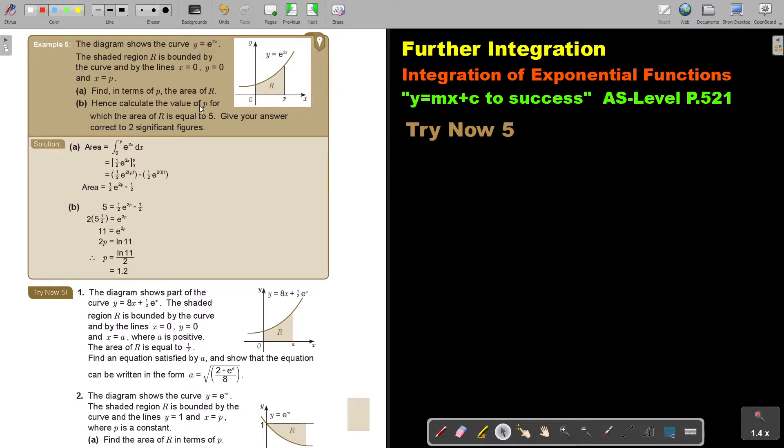Now, hence calculate the value of p for which the area of R is equal to 5. Now you put this area equal to 5, and I'm just going to solve it. So take the half over. So I add. That's why I get 5 and a half.